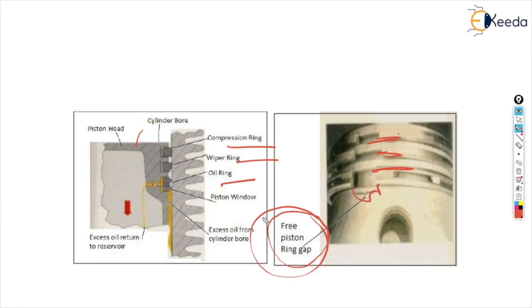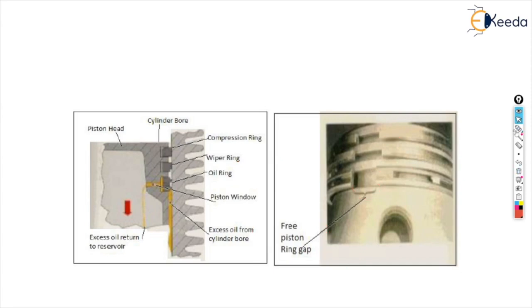Whenever the piston moves inside the cylinder, that gap is filled out. As you can see in this diagram, the first ring is a compression ring, the second is a wiper ring, and the third one is the oil ring.